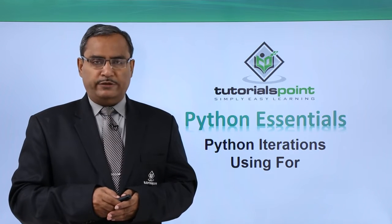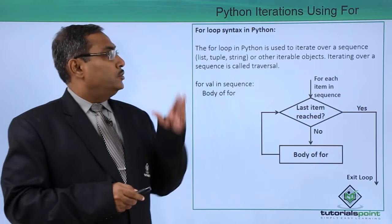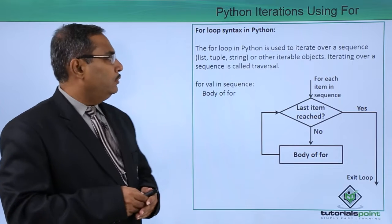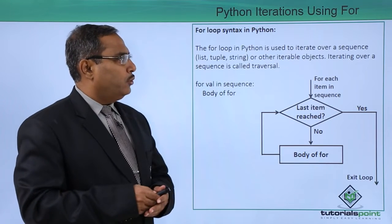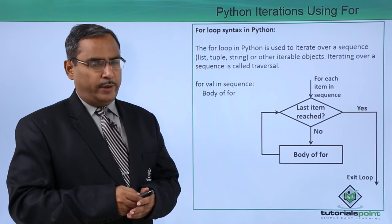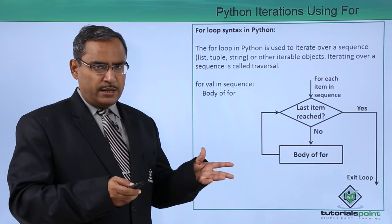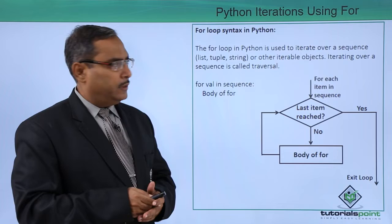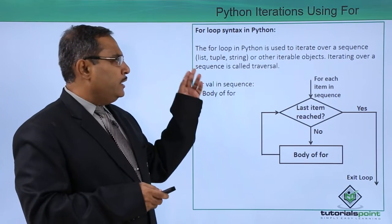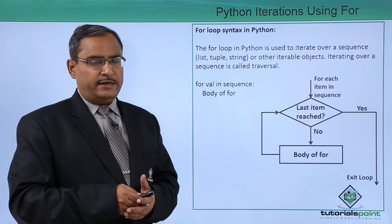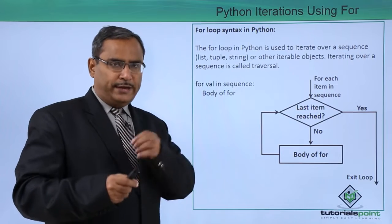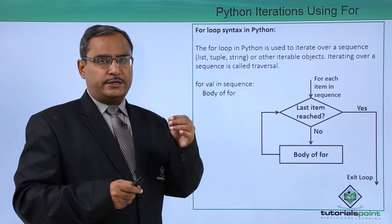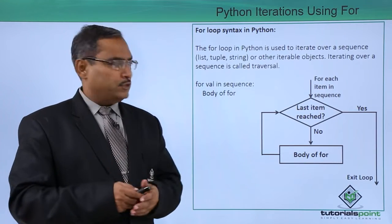Python iterations using for. The for loop syntax in Python: the for loop in Python is used to iterate over a sequence. A sequence may be a list, may be a tuple, may be a string or any other iterable objects. Iterating over a sequence is also known as a traversal, that means for each and every looping it will pick up one element from the iterator and that element can be processed.